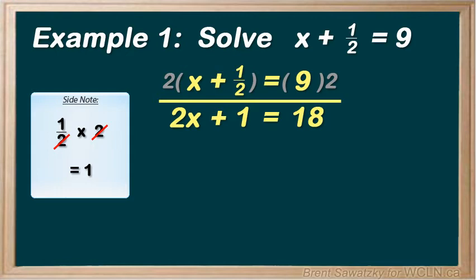2x plus 1 equals 18. It's still the exact same relationship. It's all just multiplied through by 2 and still balanced. But it now looks nice and simple, like a simple two-step problem. No more fractions.